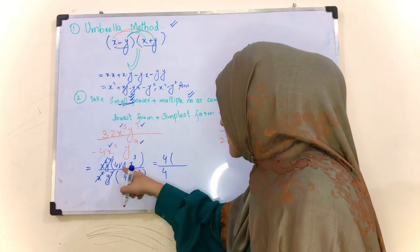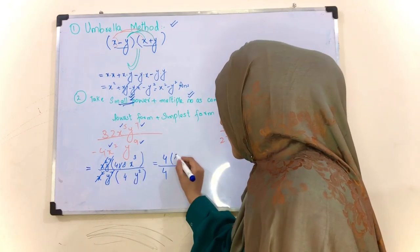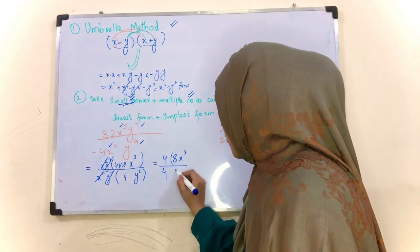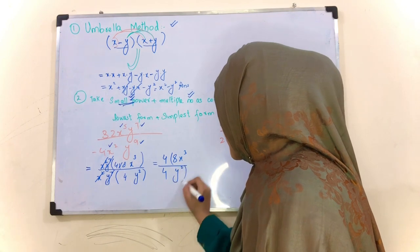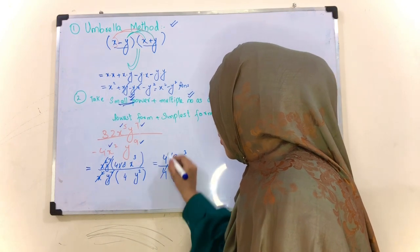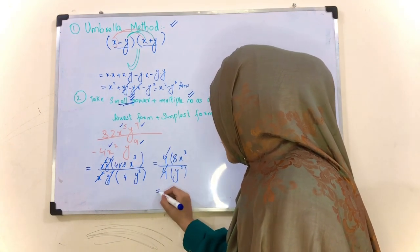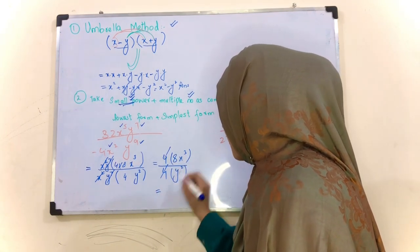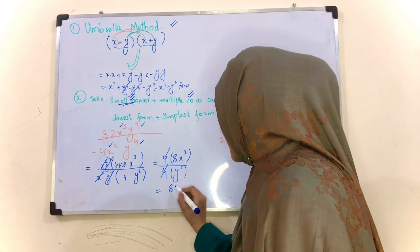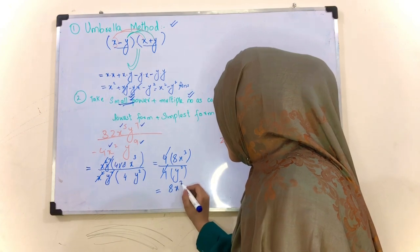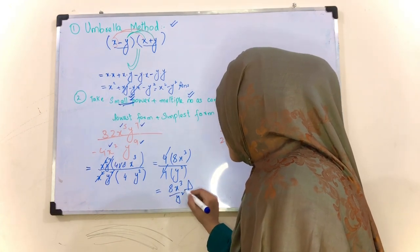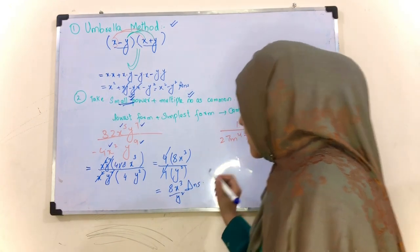To hamare paas remaining kya rahega: 8x³y. 4 getting cancelled, to hamare paas answer rahega 8x³y. This is the answer.